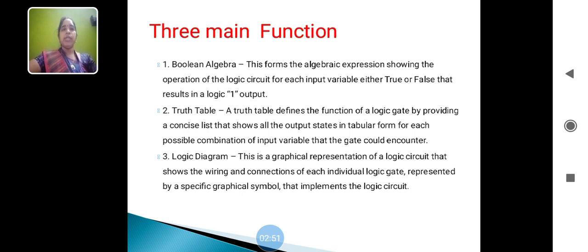Truth Table defines the functions of the logical gate by providing a concise list that shows all the output states in tabular form for each possible combination of input variables that the gate could encounter. Each and every logical gate should have a truth table. Based on this logical gate, the truth table will give a different result.